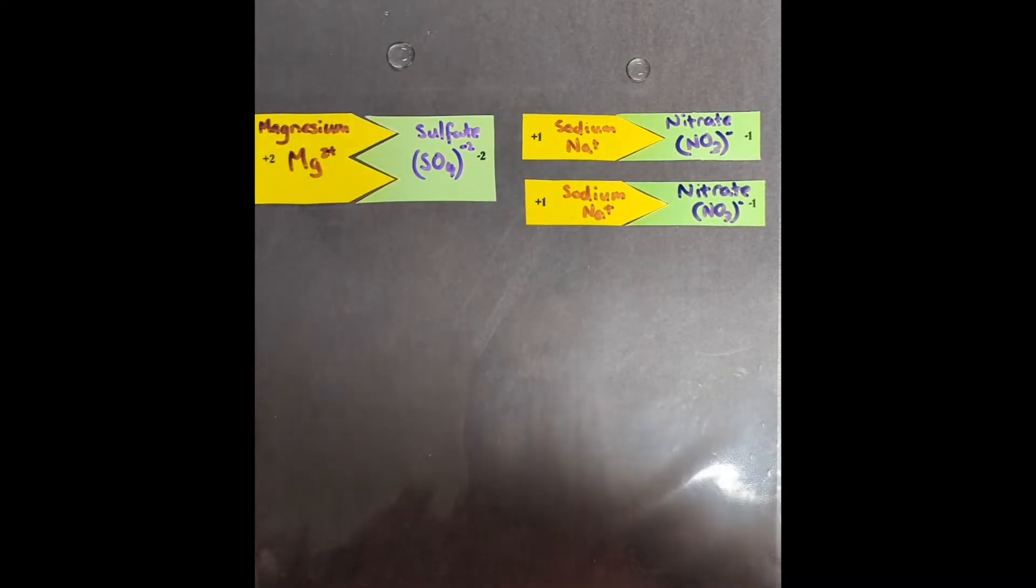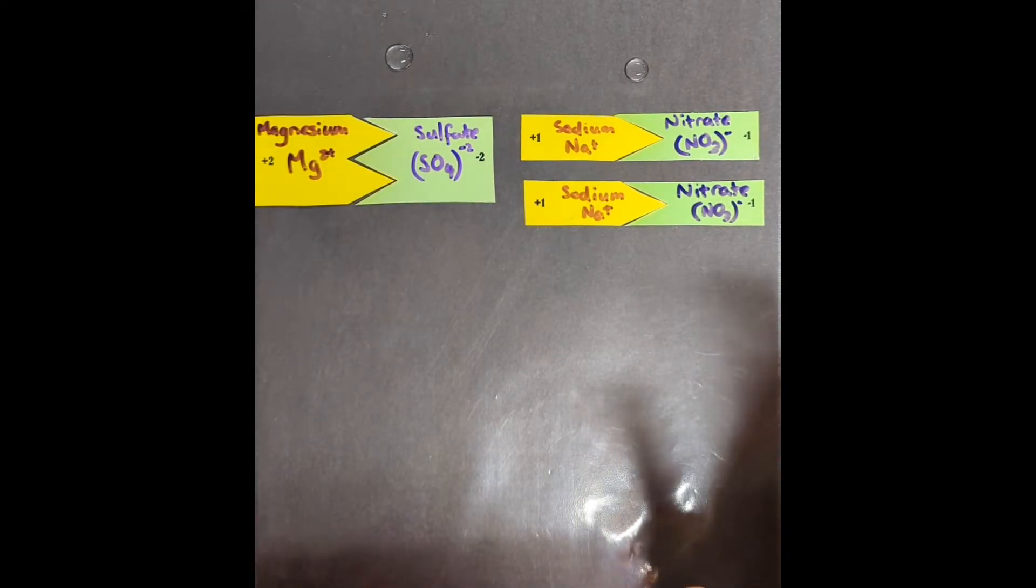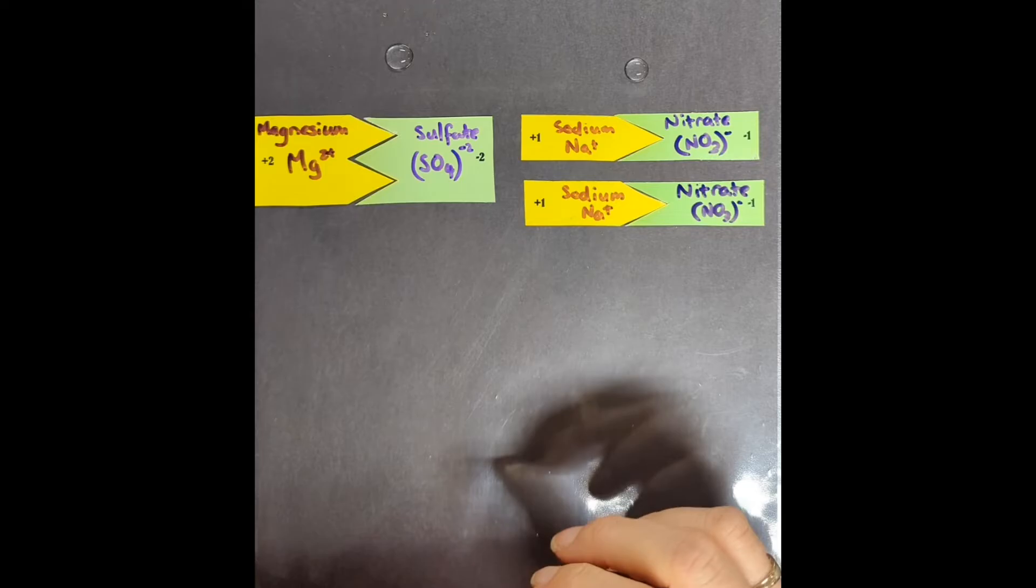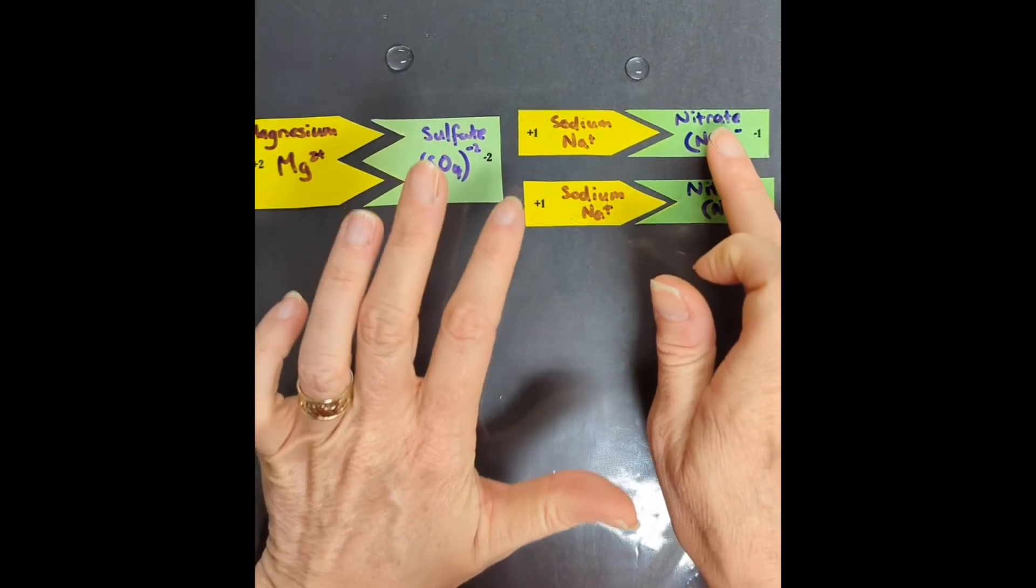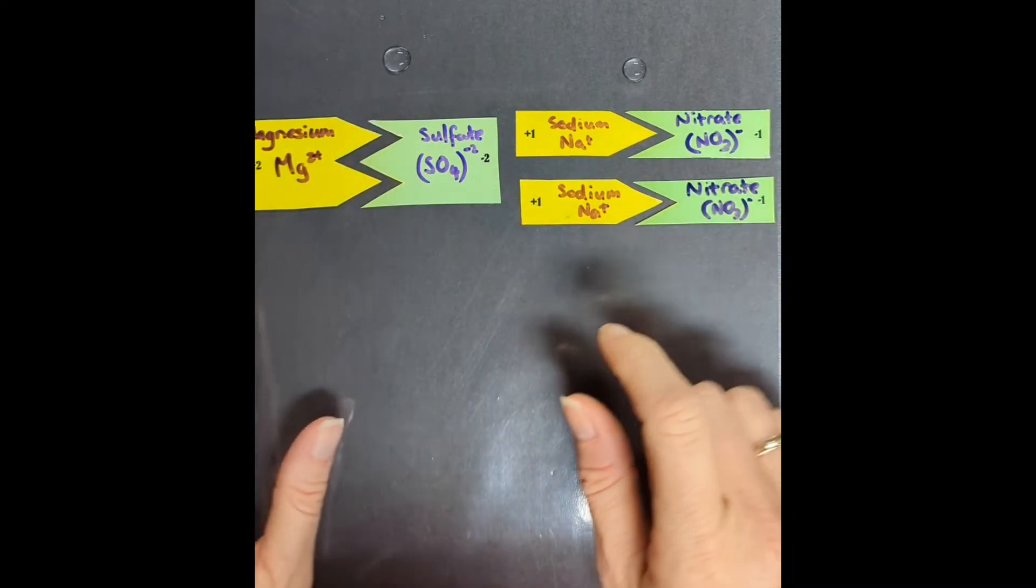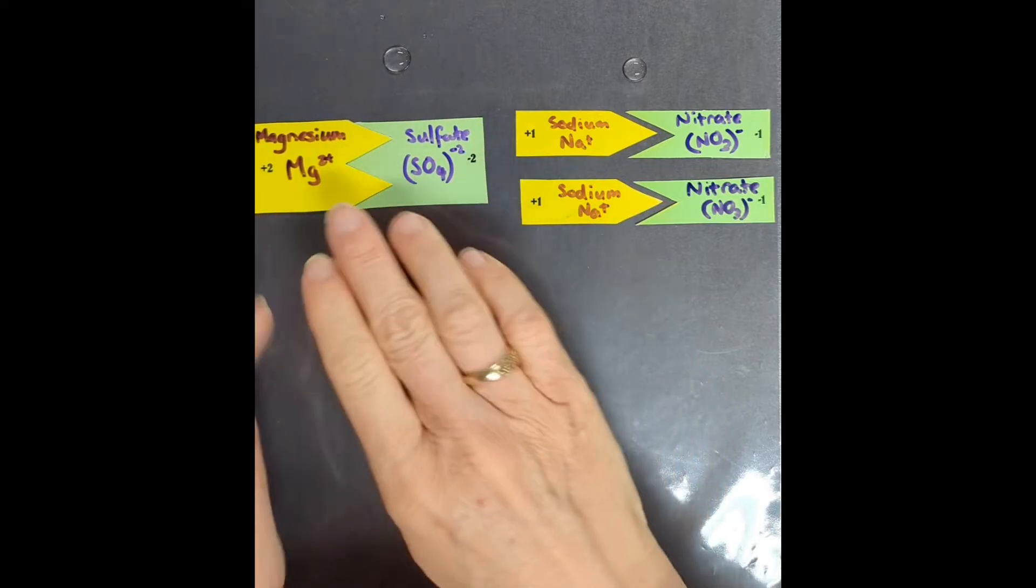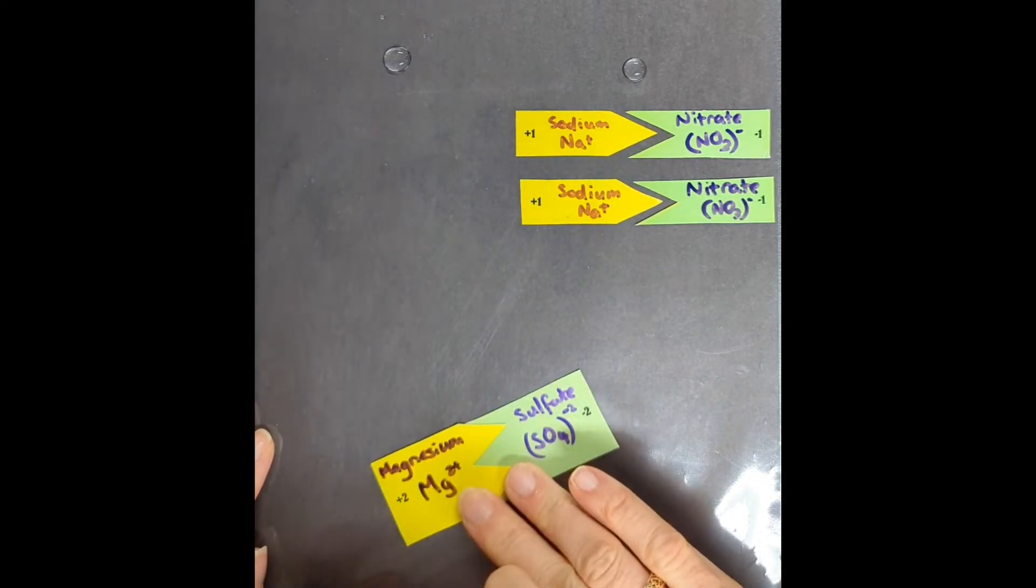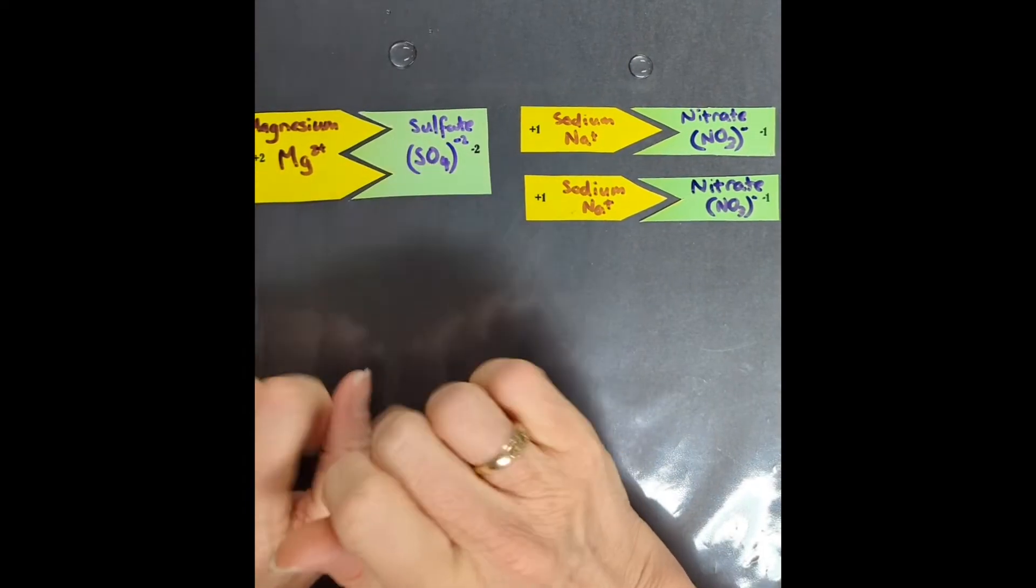Now we have to make a prediction as to whether or not we're going to see any sign of a precipitation reaction where a solid is formed. So right now, these guys are just floating around in the solution. We are predicting whether or not, when we combine them, whether one of these are going to join together and literally drop out of the solution as a solid because they're so stable. We need to make that prediction using the table that I showed you.